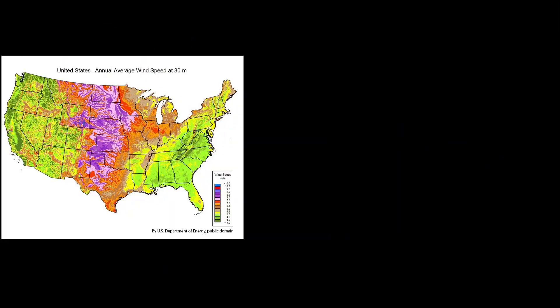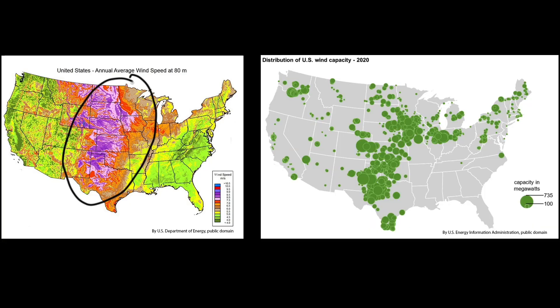For example, take a look at this map of average annual wind speeds across the contiguous United States. The purple, red, and orange places typically experience higher wind speeds, while the green and yellow places typically experience lower wind speeds. As a result, this central part of the country has a much higher capacity for producing wind energy, so more people have invested in wind turbine technologies in these places. We can see that in this second map, which shows the distribution of wind power plants across the same area. Notice how most of the country's wind power plants are concentrated around the places where people recorded the highest wind speeds.